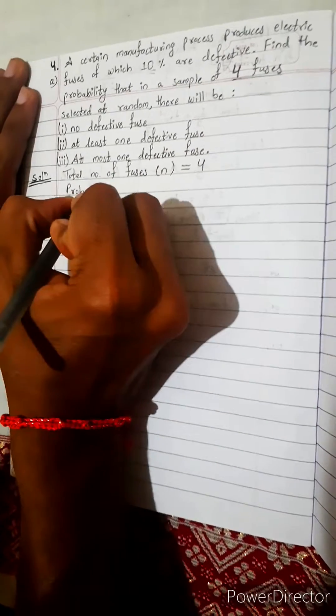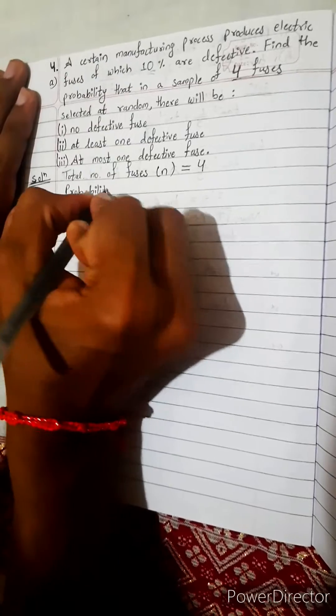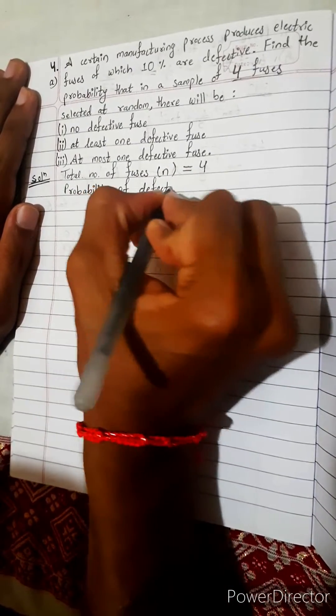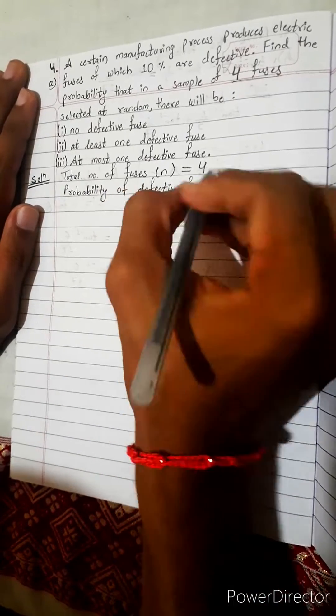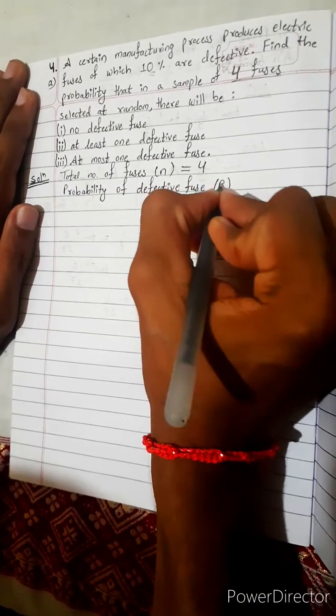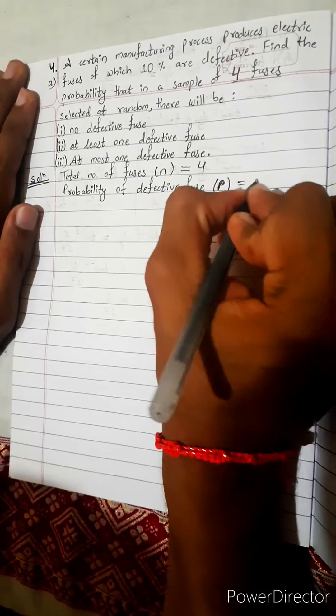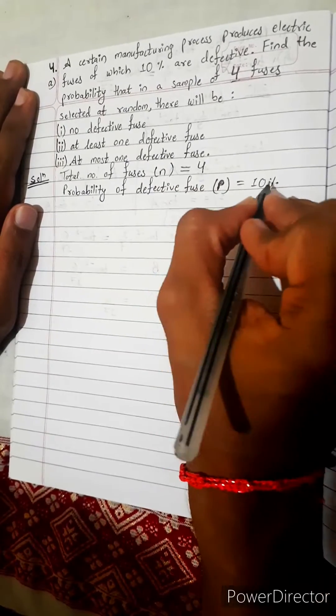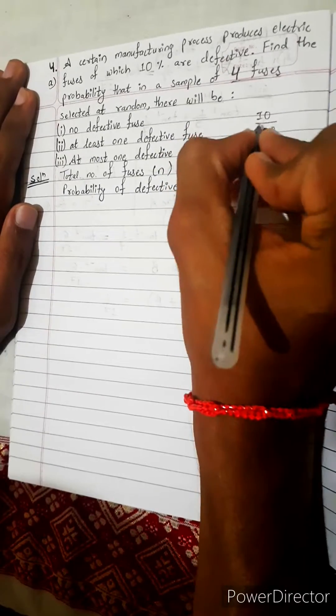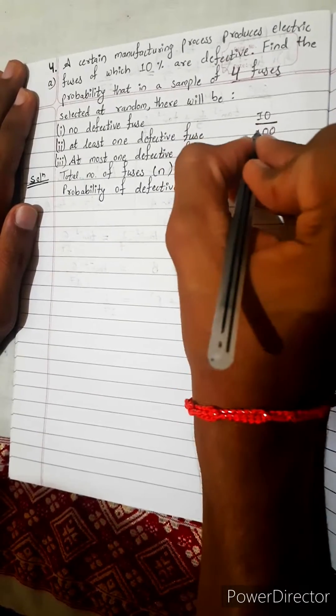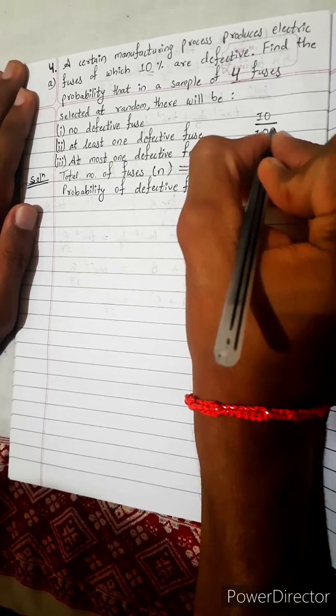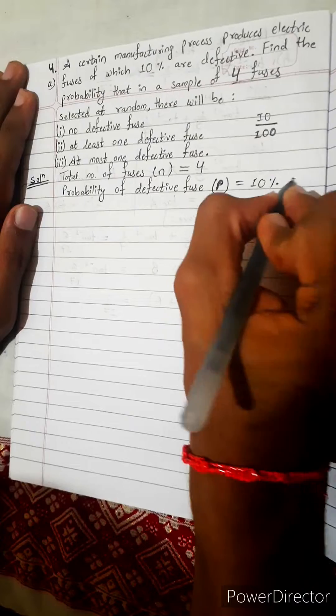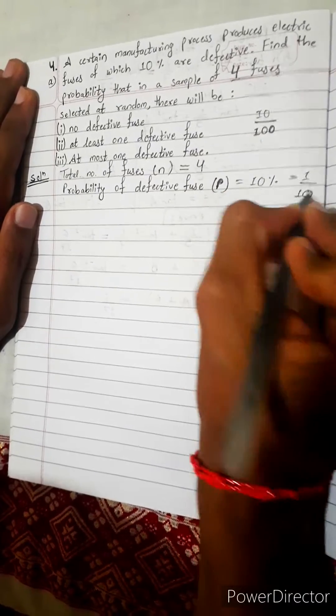Probability of defective fuse, suppose p. p is 10%. 10% means what? It means 10 out of 100. 10 per cent means division, cent means 100. 100 cents equals 1 dollar. So 10 per cent means 1 by 10.